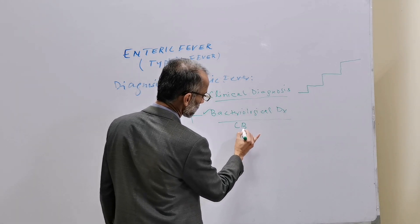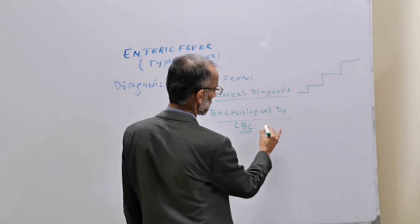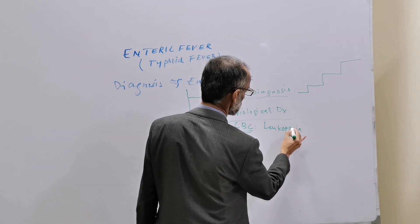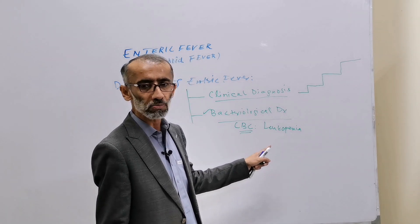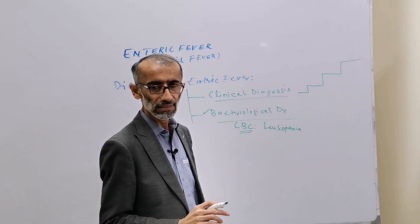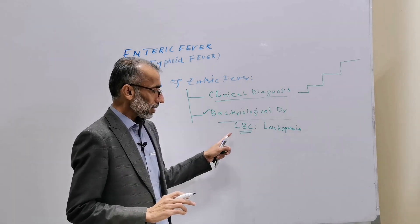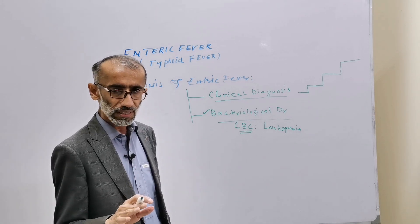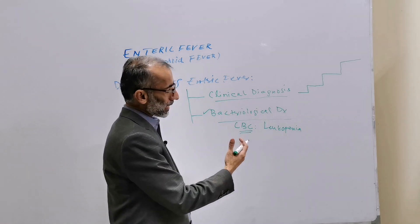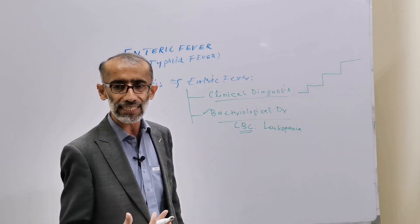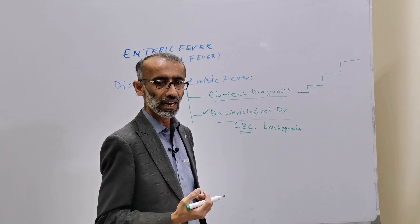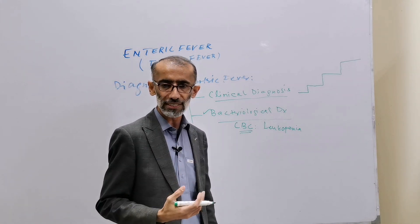The second method is bacteriological diagnosis. CBC may show low WBC count — leukopenia — or WBC count may be normal in uncomplicated Enteric Fever. In case of intestinal perforation, there may be leukocytosis, thrombocytopenia, and anemia. In severe Enteric Fever due to septicemia or disseminated intravascular coagulation (DIC), these findings are also seen.